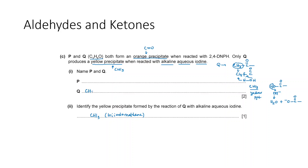Q contains CH₃CO–, and the remaining molecular formula gives CH₃ — so Q is propanone. P does not react to form a yellow precipitate with alkaline aqueous iodine, meaning the C=O is not bonded to a CH₃ group. The only other option is an aldehyde: P is CH₃CH₂CHO — propanal — with the carbonyl group bonded to an ethyl group and a hydrogen atom.